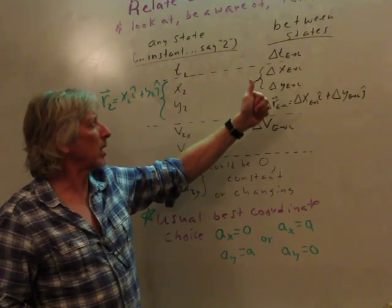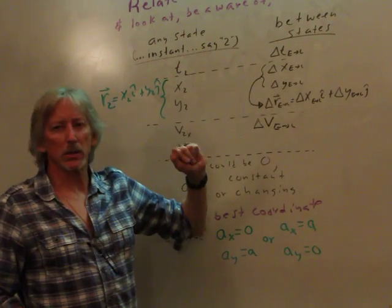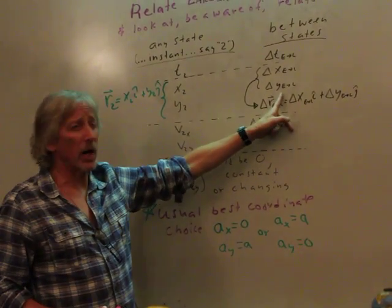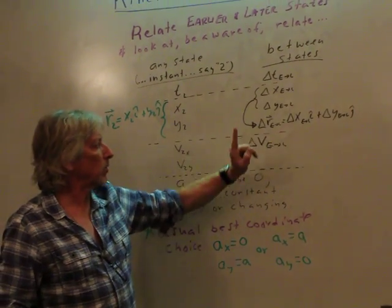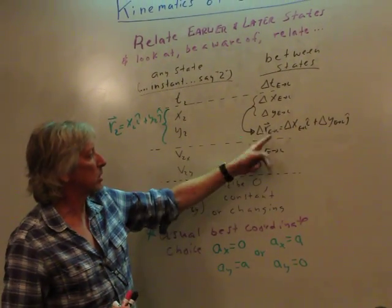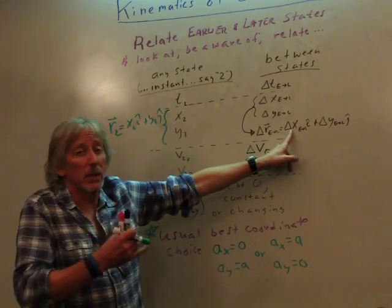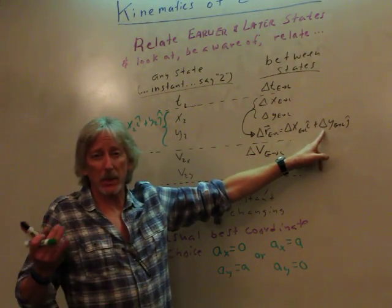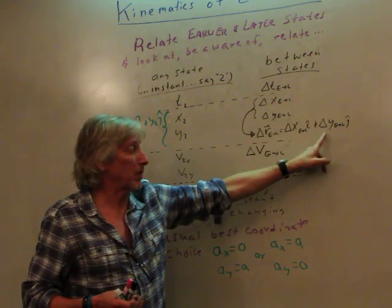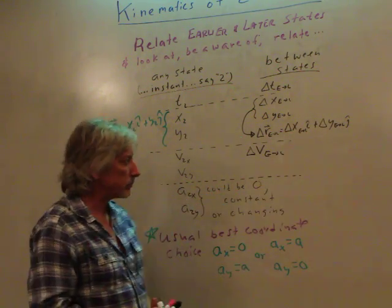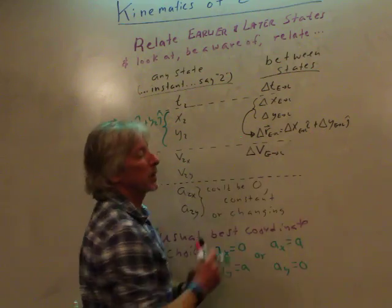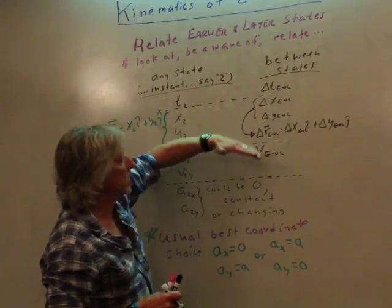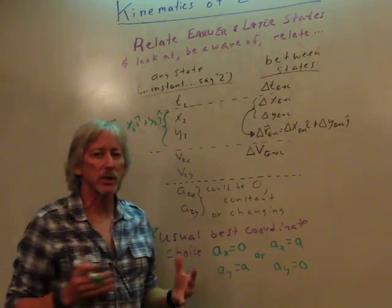We've got changes, changes in time between two states, earlier to later. Change in the X position, change in the Y position. Together, you have the actual motion, which is the change in the actual position. You move some in the X direction, whatever that is, maybe it's east. Some in the Y, maybe that's north. Maybe that's horizontal, maybe that's vertical, whatever. Okay, so we're going to ultimately put it back together. But to analyze it, we're going to divide it into the X motion and the Y motion as though they were separate.